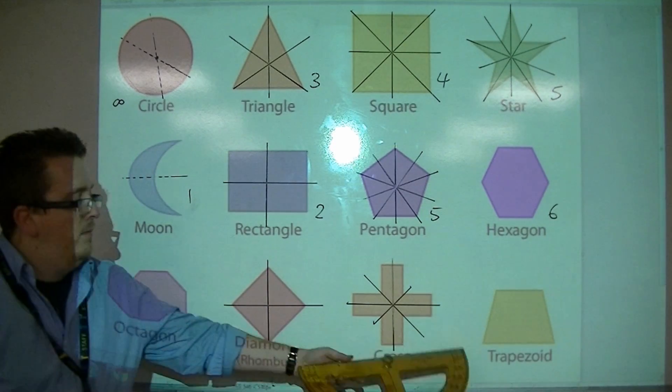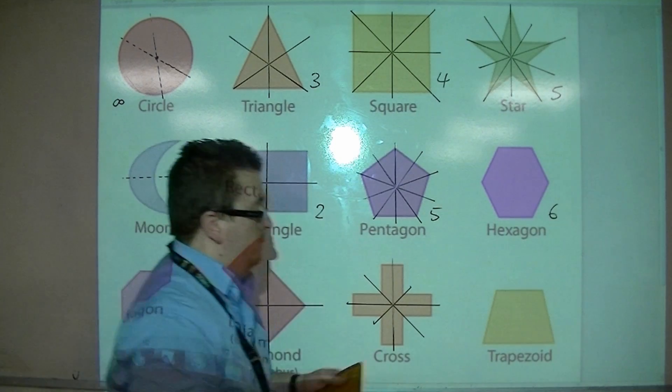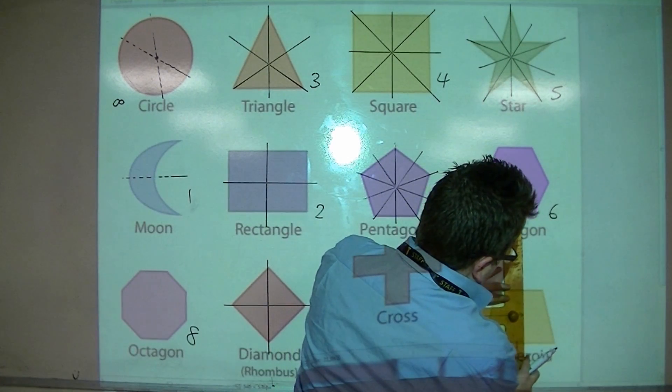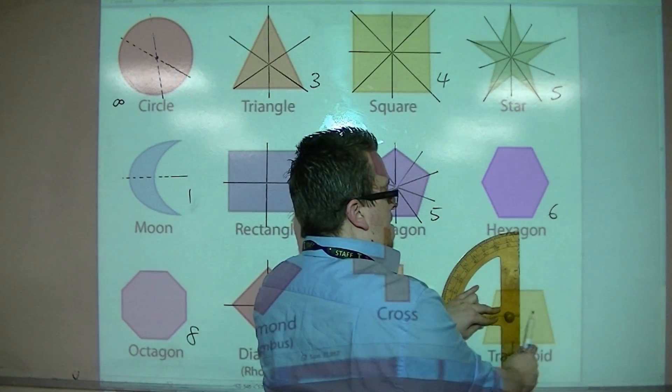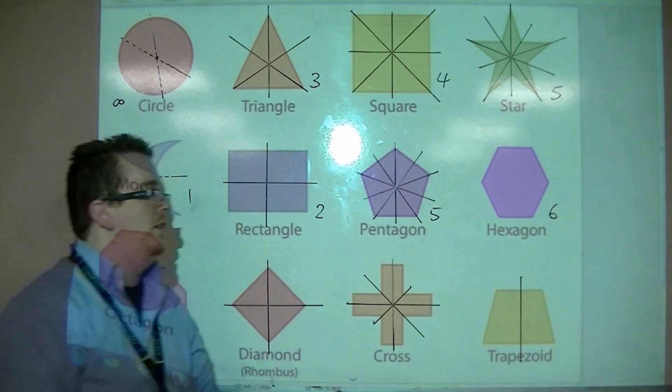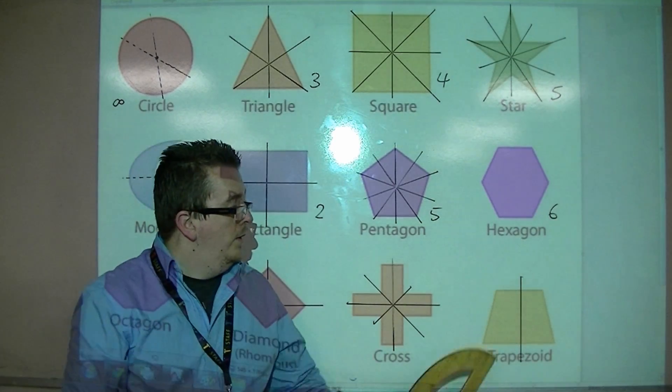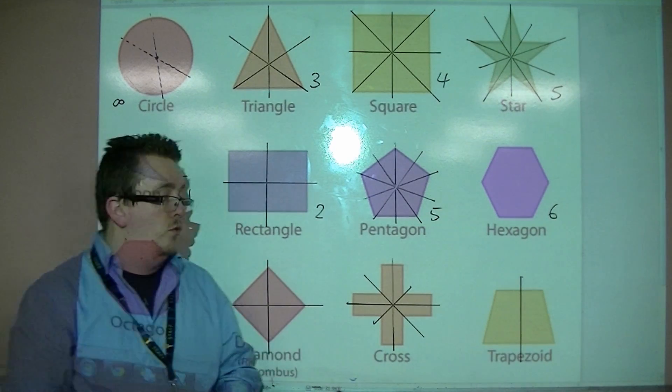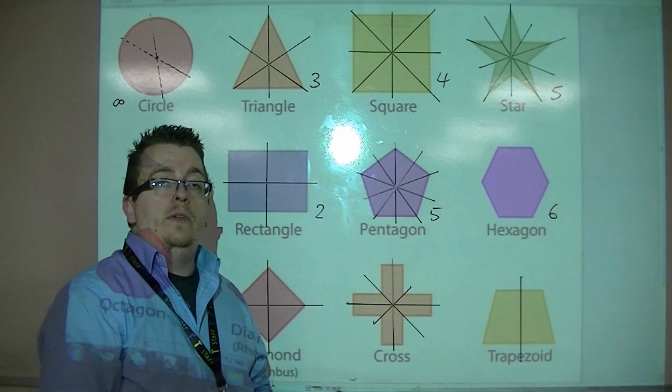And finally, it says trapezoid there. Trapezium, if it has a line of symmetry, it might be possible to have a line of symmetry down the middle, like so. But, depending on how the trapezium is drawn. If it's a regular trapezium like that, then, yes, you will be able to do that.